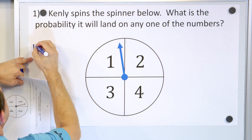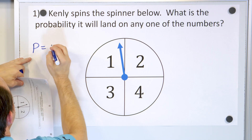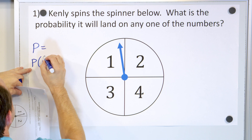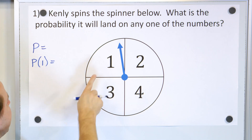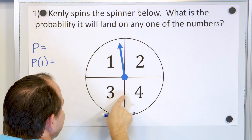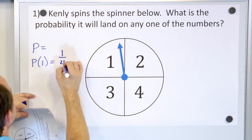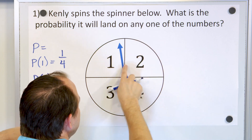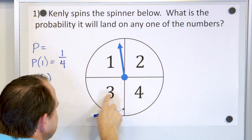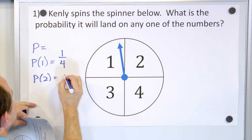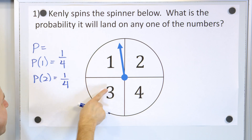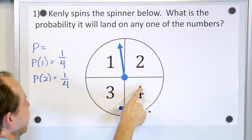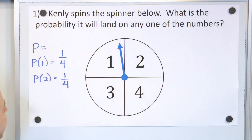That basically means the probability of landing on the number one is one possible outcome out of a total of four. The probability of landing on a two is also one outcome out of a total of four. The probability of rolling a three is also one-fourth, and the probability of spinning a four is also one-fourth.